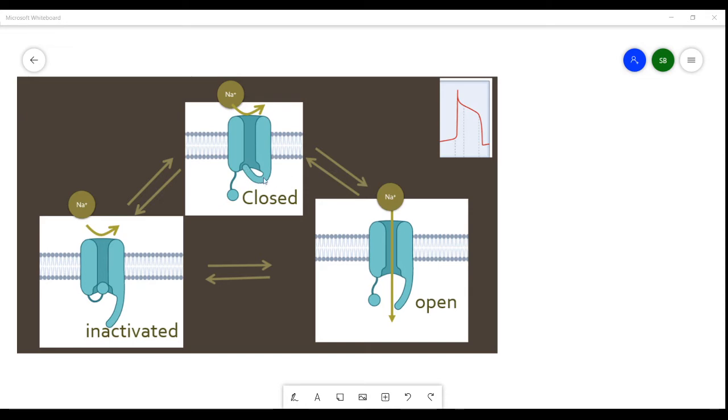In addition to this usual voltage gate, there's an additional gate called the inactivation gate. Research has shown that this inactivation gate is caused by a ball and chain mechanism.